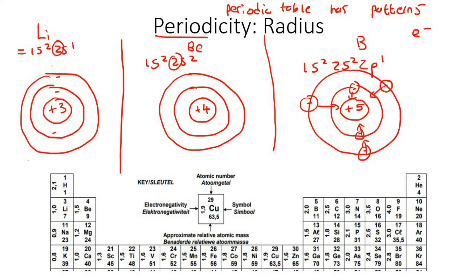So as you go from left to right in a period, the radius becomes less. As you move from left to right in a period, the number of protons increases, which causes the nuclear charge — the nucleus is the part in the middle — to become more positive.